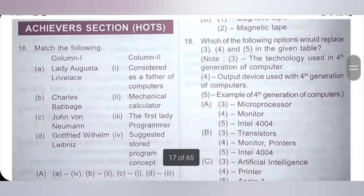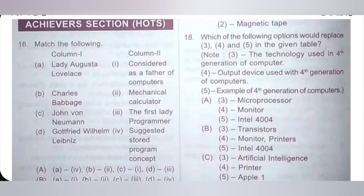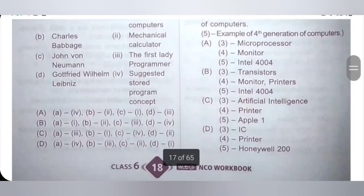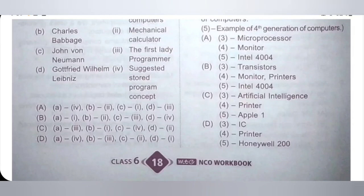18th question: Which option would replace 3, 4, and 5 in the given table? Note: 3 is the technology used in 4th generation — microprocessor. 4 is the output device used with 4th generation — monitor. 5 is an example for 4th generation — Intel processor. Option A is correct: technology is microprocessor, output device is monitor, example is Intel 4004.